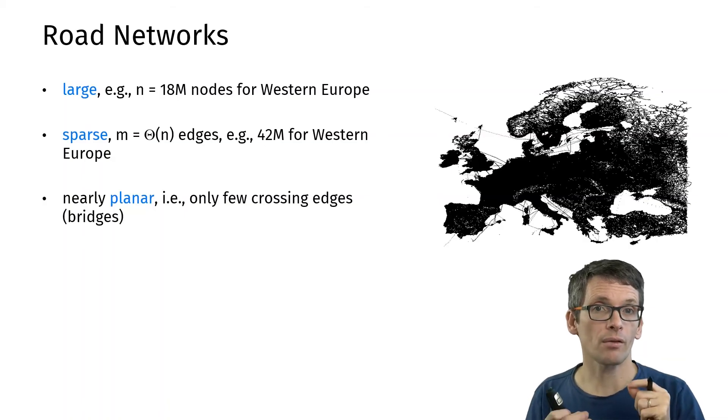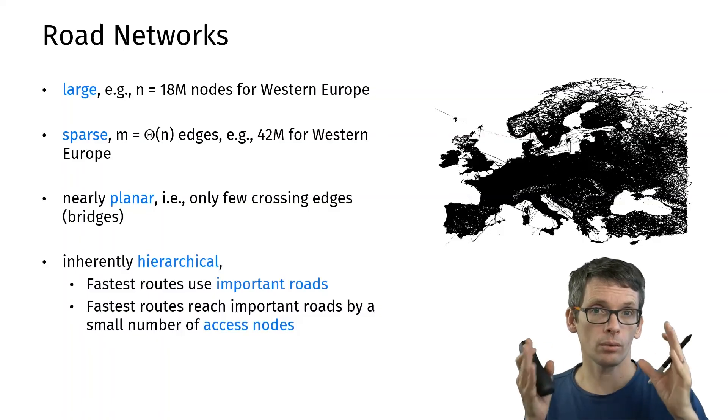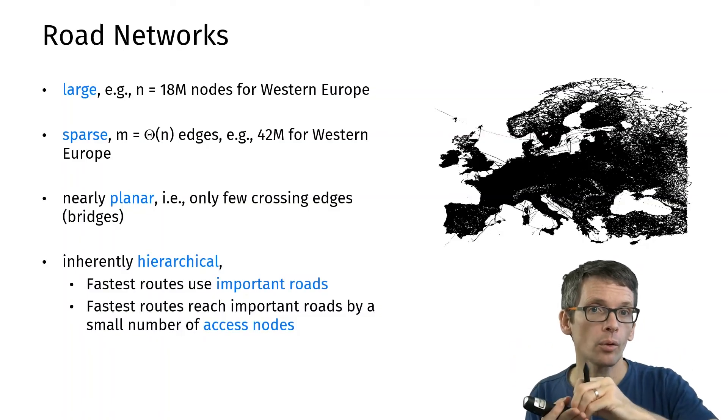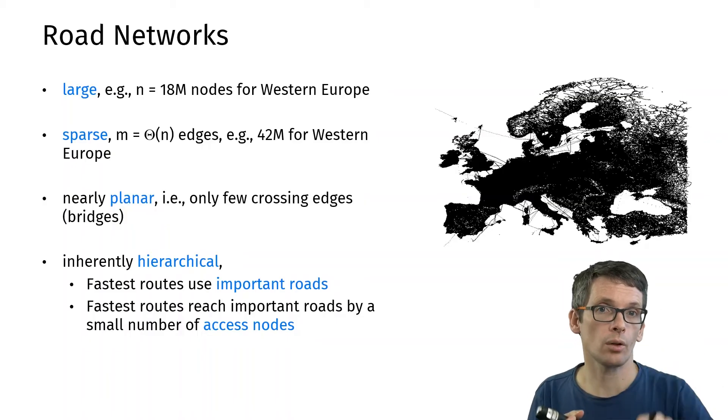When is the computation of the shortest path expensive? It's expensive if we have to look at many nodes but that also means that we're traveling very far. If we travel very far we actually use important roads, motorways, and we go to those motorways using certain access points. So our route is actually very restricted and that's something we're going to make use of.